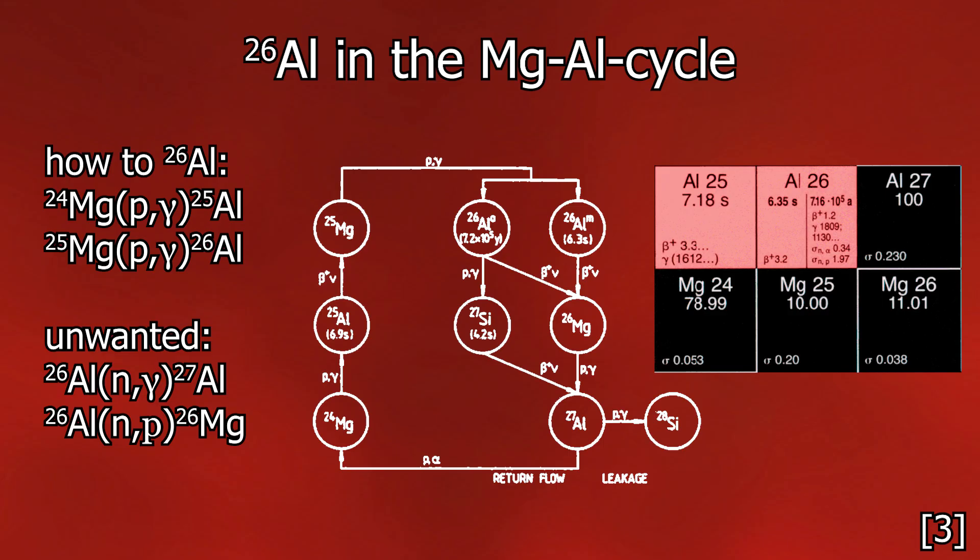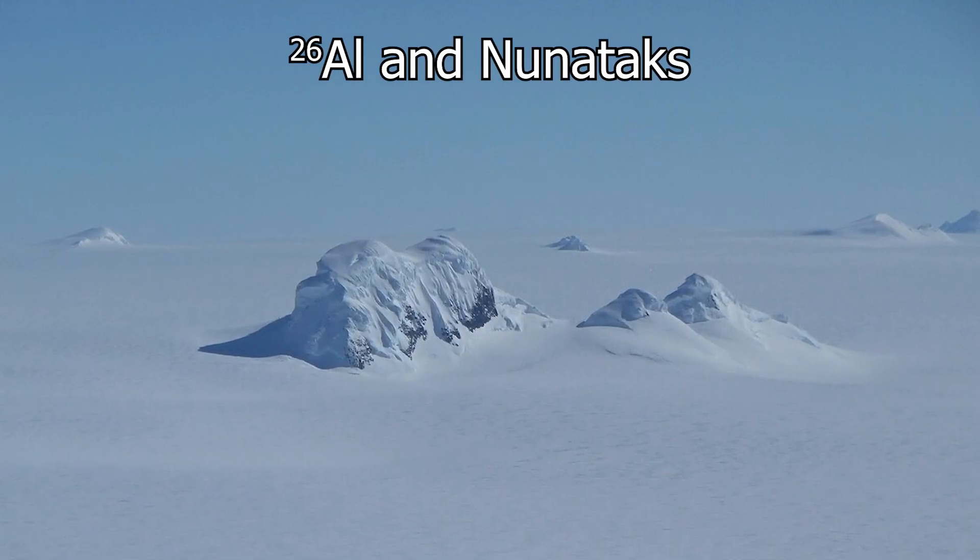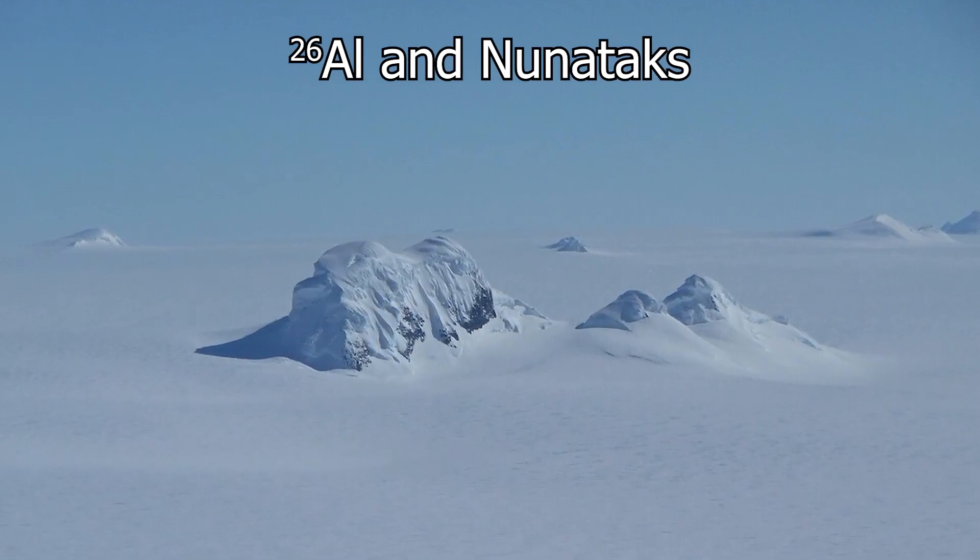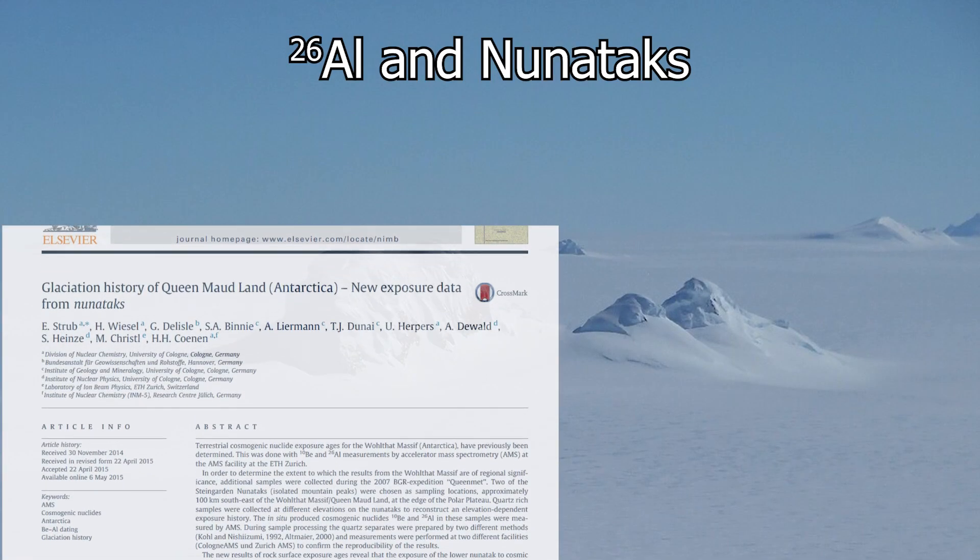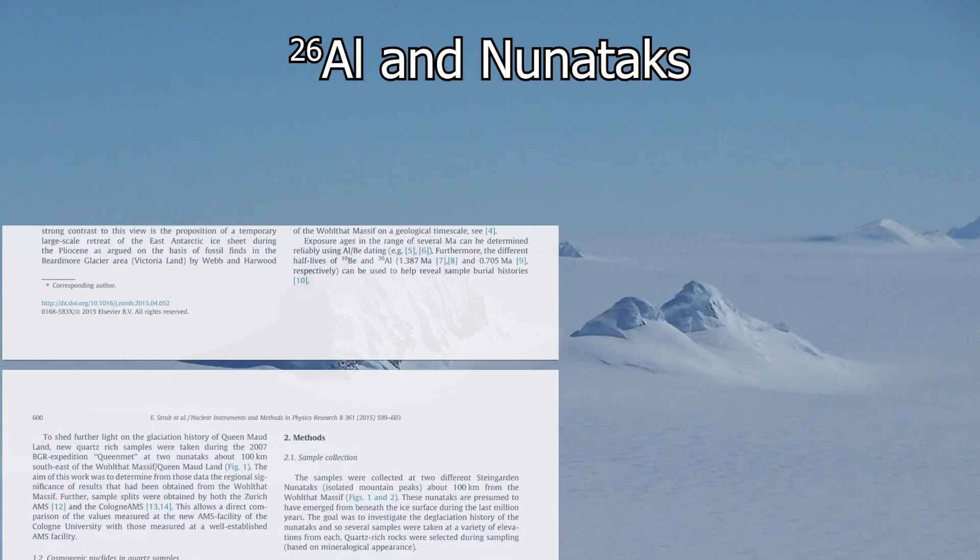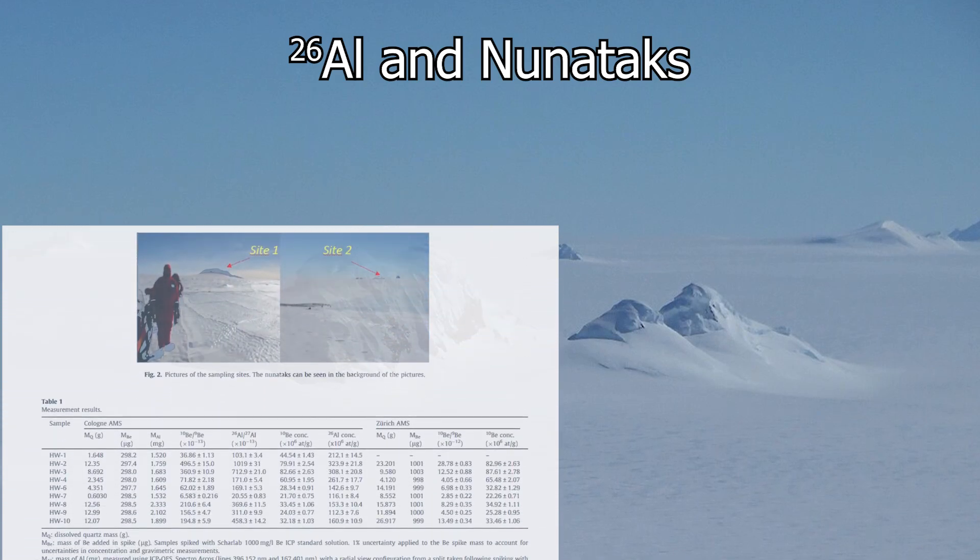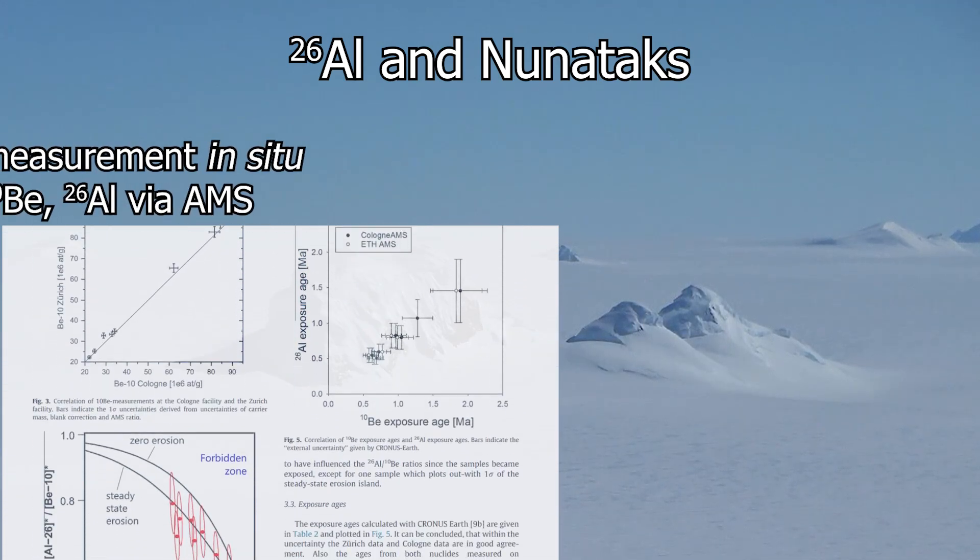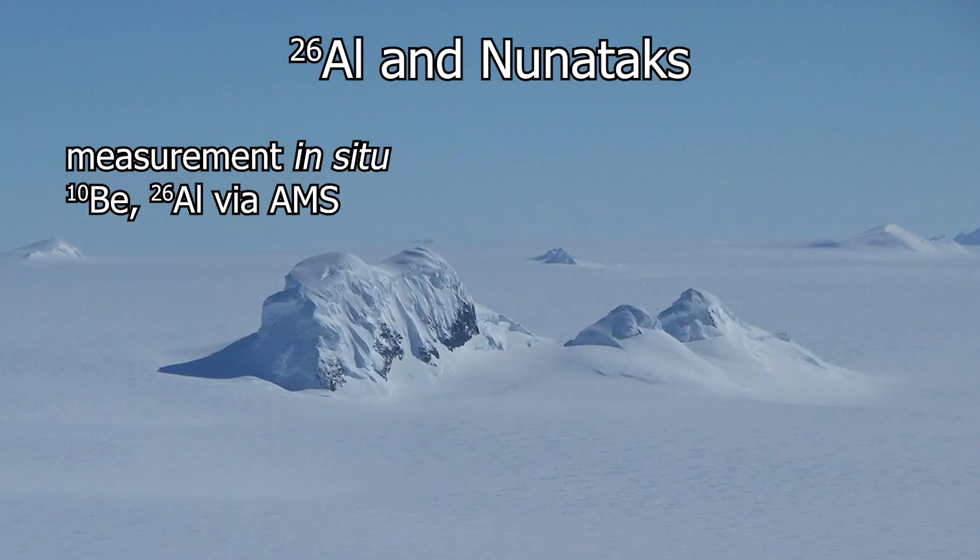If your head is not spinning yet, not only meteorites as mentioned before can be dated via aluminium-26, but other silicate material. In this paper, for example, aluminium-26 was used in combination with beryllium-10 to trace the past of the Antarctic. Much smaller amounts of aluminium-26 are produced in situ by cosmic ray interaction on silicates. That is less than 10 to the power of 9 atoms per gram of material, so silicon dioxide material. For this, you definitely need AMS. The radiation is no longer detectable.